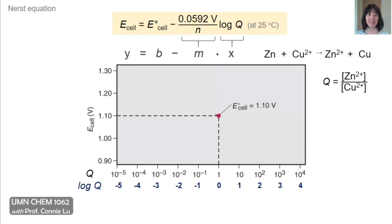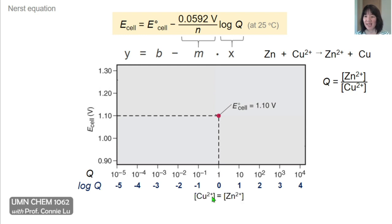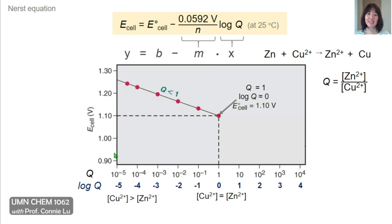Returning to the zinc-copper voltaic cell where E° = 1.1 V, Q is the concentration of zinc 2+ product divided by the concentration of copper 2+ reactant. At the Y-intercept, log(Q) = 0, meaning Q = 1. This occurs at standard state but also at any other concentrations where copper 2+ and zinc 2+ have equal molar concentrations. At this point, the cell potential equals the standard cell potential.